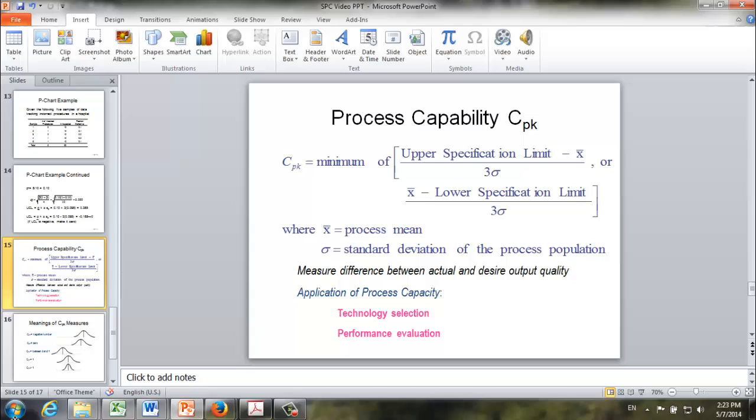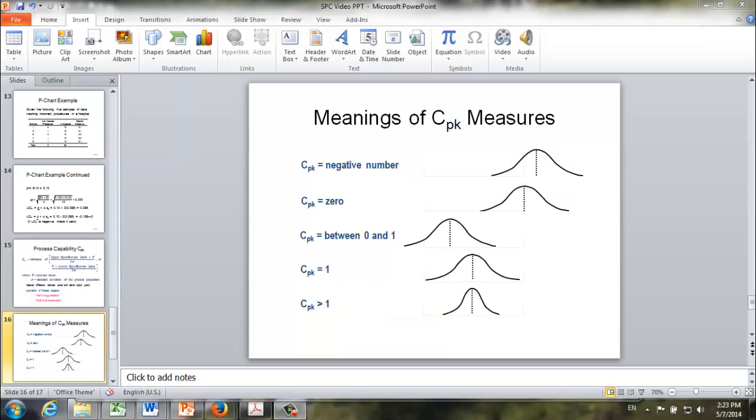X-bar is the sample mean or process mean, and sigma is the standard deviation. Now let's take a look at the meaning of CpK, process capability.